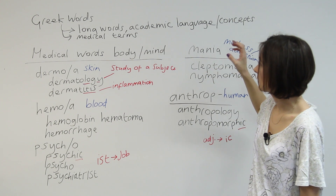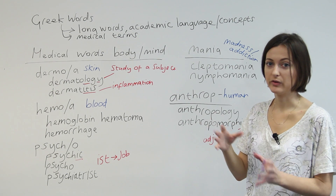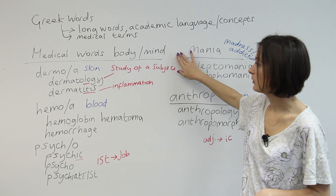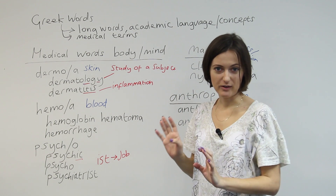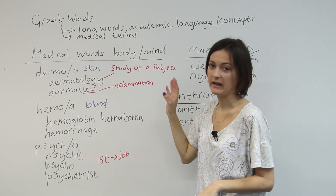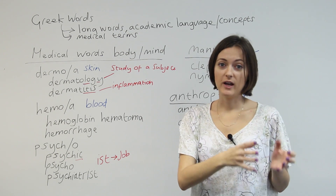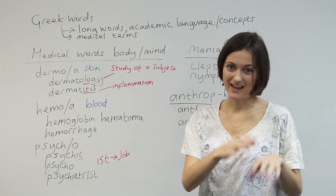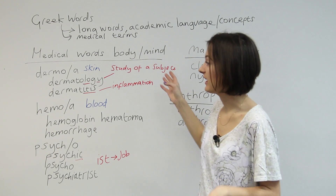Most of the time when we find a Greek word in English, it's academic language — it represents a concept or idea — and there will be quite a lot of medical language as well. The Greeks from a long time ago were very knowledgeable about medicine. So we took a lot of words from their language. We didn't have words for these things because it was not knowledge known here. The concepts came from Greece, and with that, the language came from Greece.